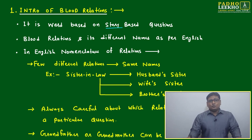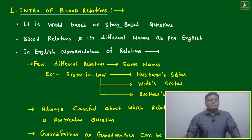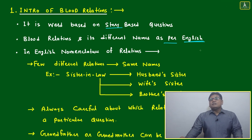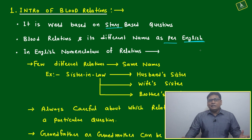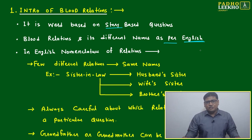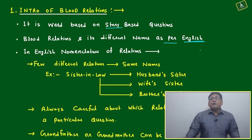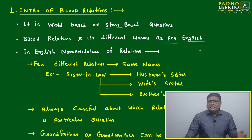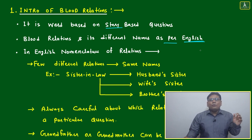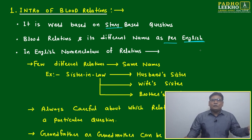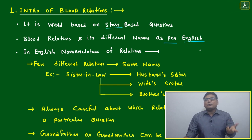Blood relation questions generally use English names. English is not very rich in relationship terminology. For example, they use the word 'uncle' for both paternal and maternal sides, which can be very confusing.